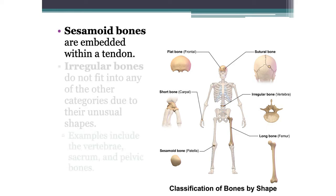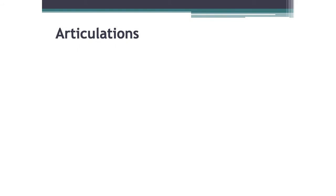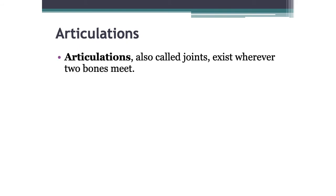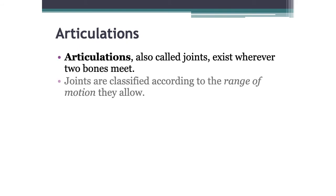Sesamoid bones are embedded within a tendon — the patella, the kneecap, would be an example. Irregular bones don't fit into any other categories. Examples include the vertebrae, sacrum, and pelvic bones; they don't really fit into any of those others.